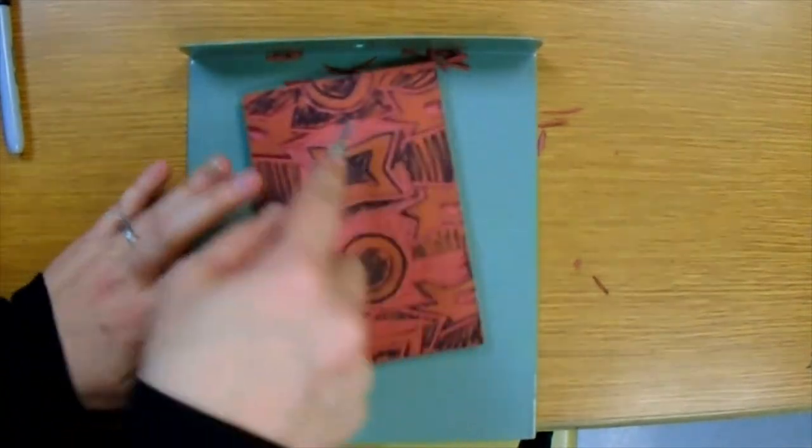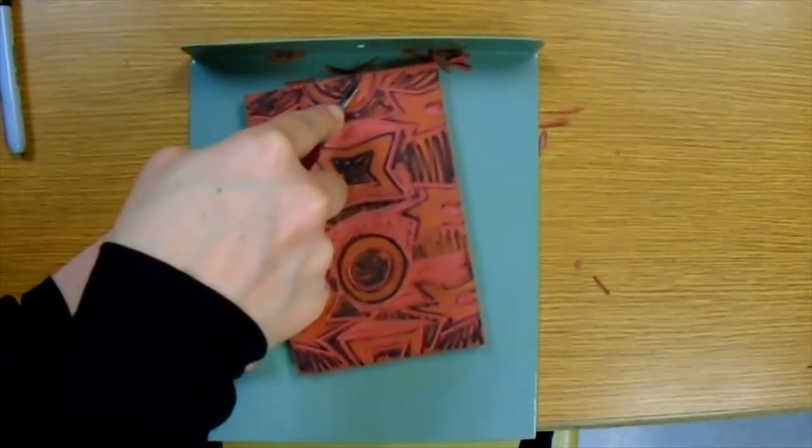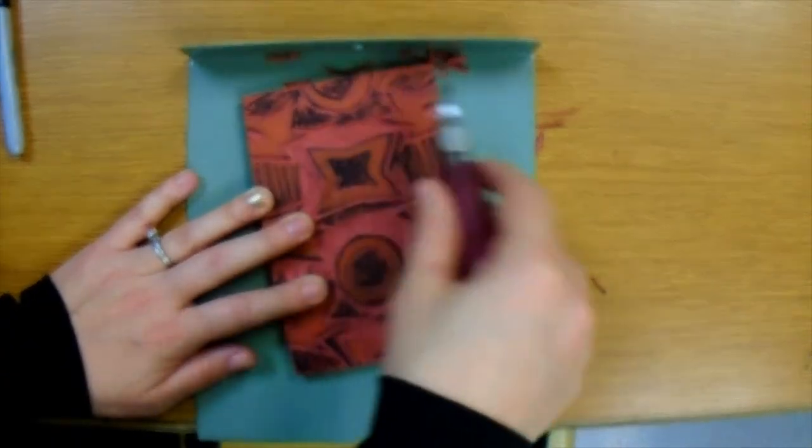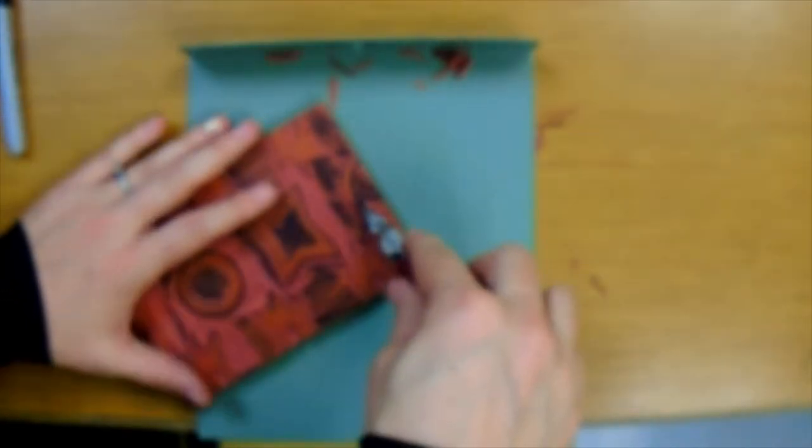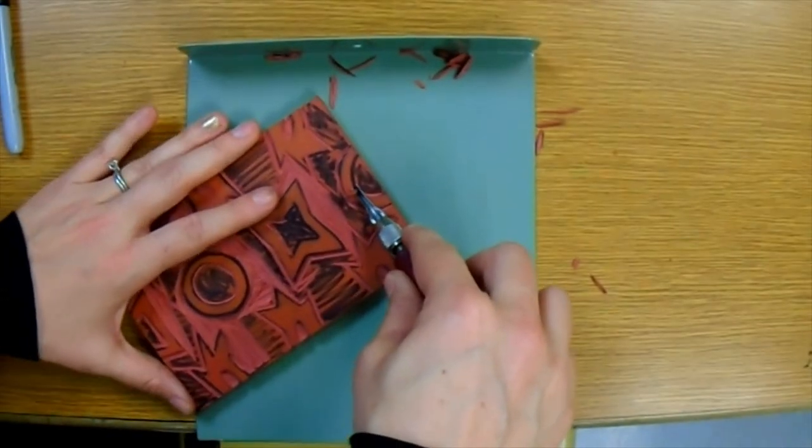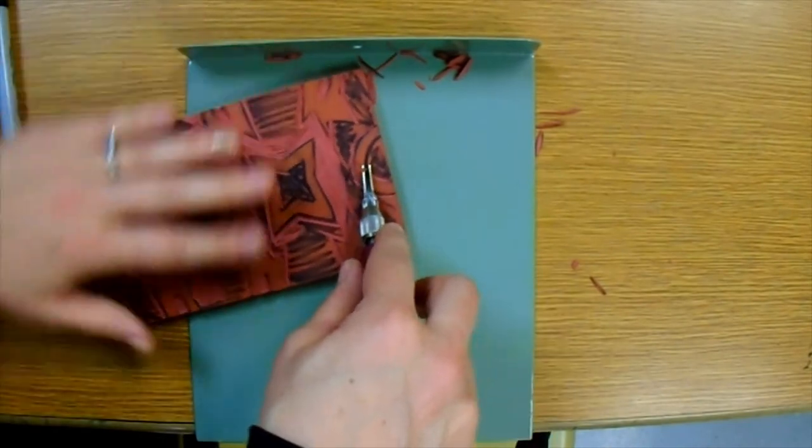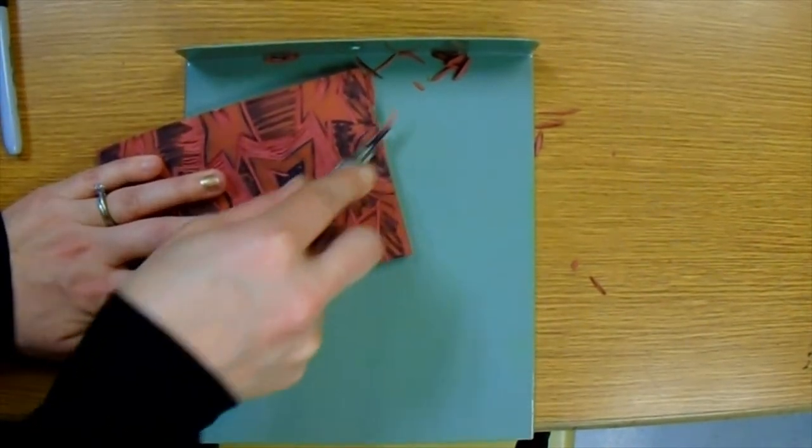So sometimes it's easier to carve from the middle of the stamp out towards the side edges. So now I'm getting too close to my fingers, so I'm going to turn my stamp this way.